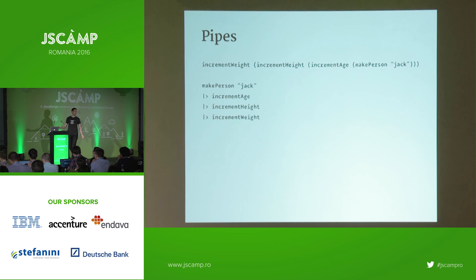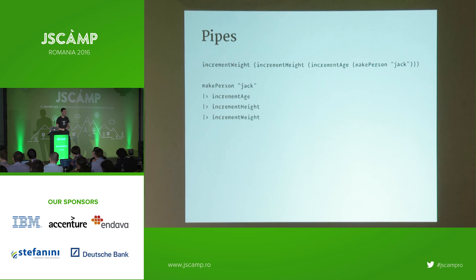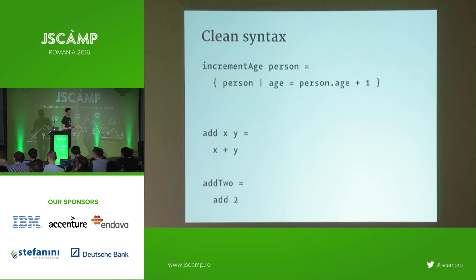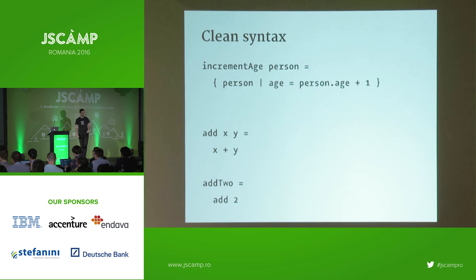One of my favorite features from a syntax point of view is pipes — there's actually a proposal to add something like this to JavaScript. Rather than deeply nested functions you have to read inside-out, you can pipe: take what makePersonJack returns, send it through incrementAge, then incrementHeight, then incrementWeight. This leads to really readable, self-documenting code. Defining functions has no braces, brackets, commas, or semicolons — once you get used to it, it's a pleasure to work with.